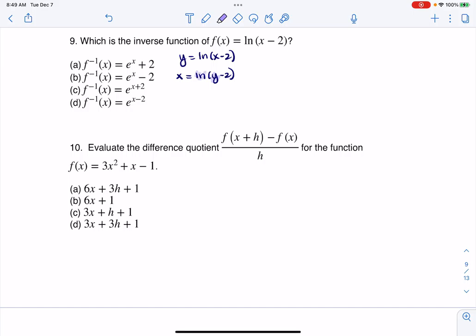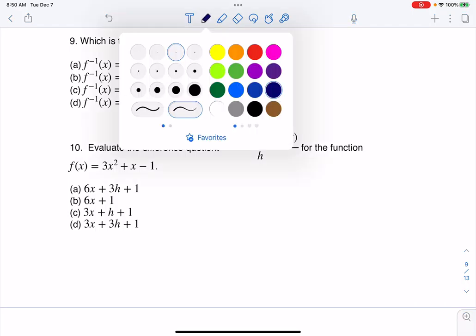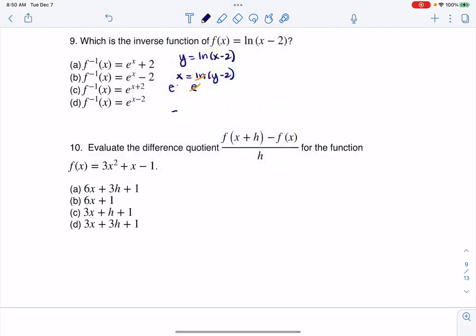I have to undo that natural log, and I'm going to do that by taking e to both sides. I'm going to make each of these expressions on the left and right the exponents. So e^x has to equal e^(ln(y - 2)).